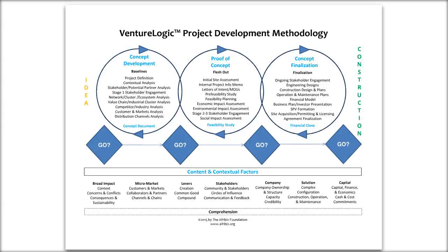Second is content and context — looking in detail at the different variables that impact how well a project can be brought together. These are often things that project developers cannot necessarily control, such as government regulations or the state of technology in a given sector. The content and context is really where the project either lives or dies.